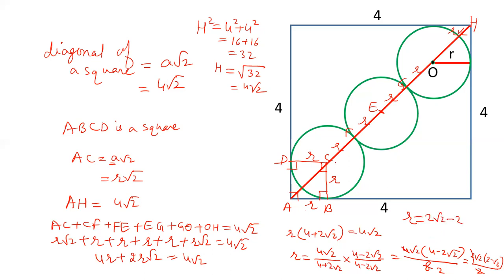In this case, the radius of the circle will be 2 times (root 2 minus 1). I hope friends you liked this video. Please like our videos and subscribe to our channel.